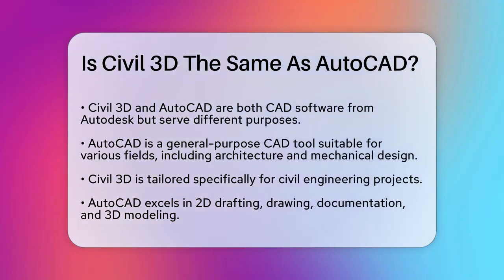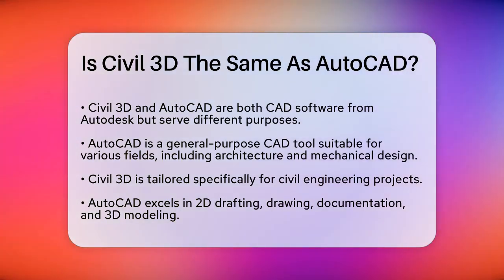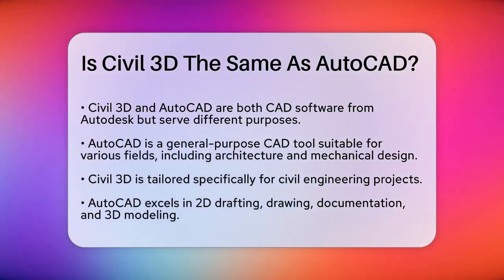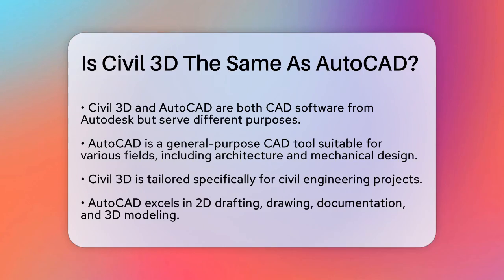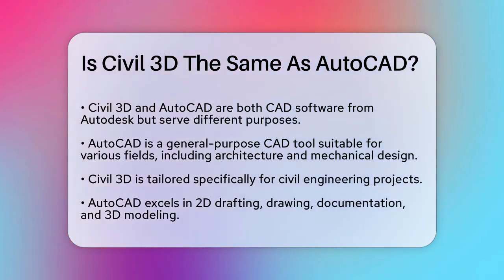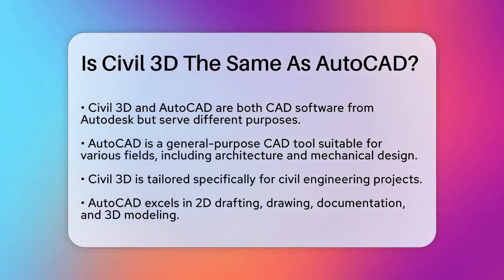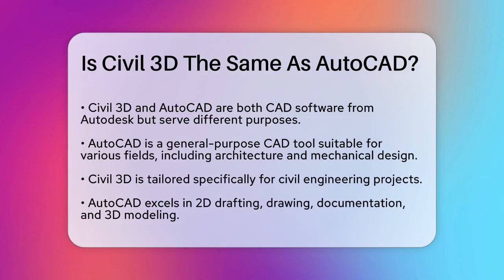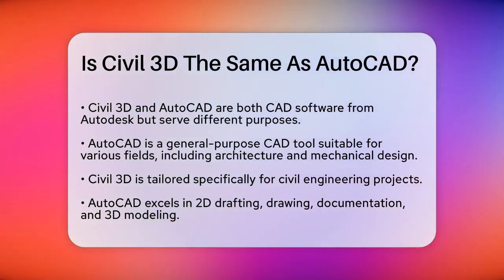First off, both AutoCAD and Civil 3D are used for design and drafting, but they serve different purposes. AutoCAD is a more general-purpose CAD software that can be used for a wide range of tasks, including architecture, electrical design, and mechanical design. It's great for 2D drafting, drawing, and documentation, as well as 3D modeling and visualization.